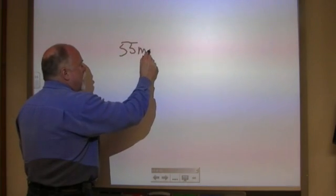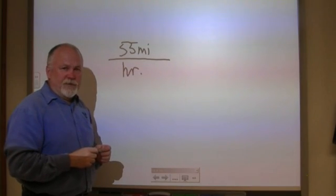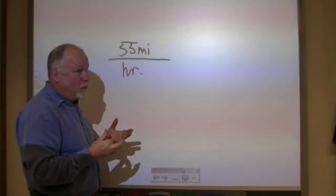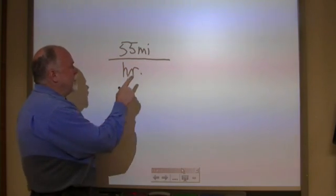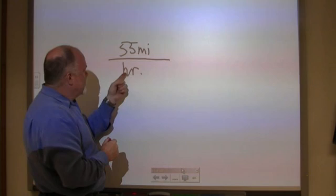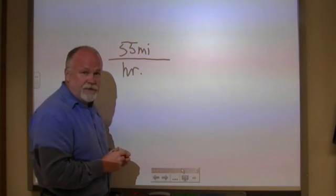Let's start with an example. I've got 55 miles per hour and I want to convert that into meters per second. The technique is simply to multiply this by 1. And so I have to come up with ways of multiplying this by 1 to get rid of hours, get rid of miles, and be left with meters and seconds.